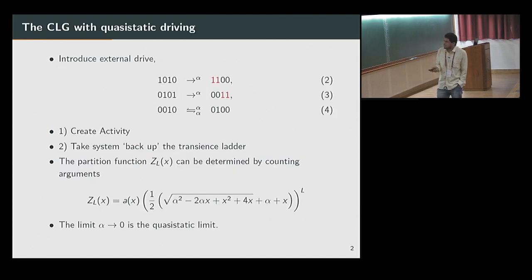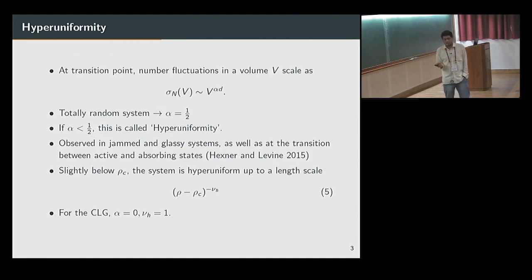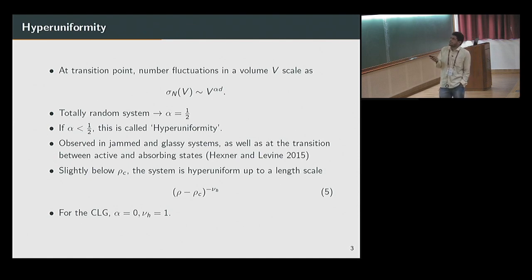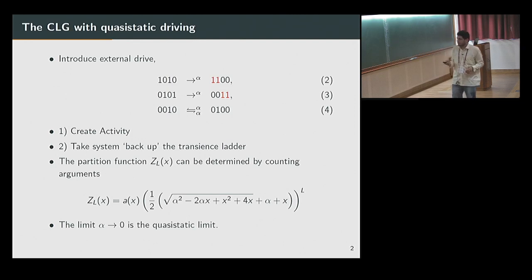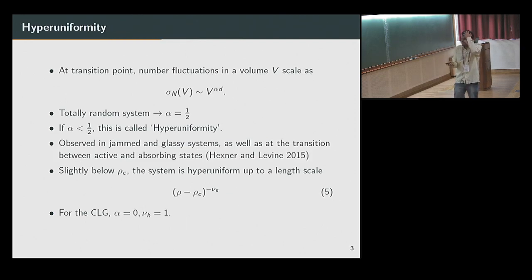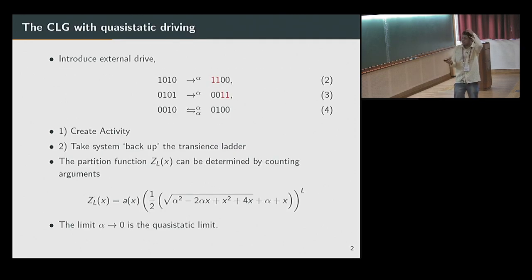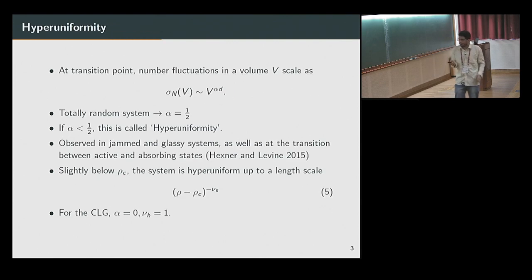From this counting and taking the limit alpha equal to zero, you can determine that for the CLG, alpha_D is zero — because the system at rho_c is just periodic, so there are no fluctuations in the number of particles in any volume. And nu_h equal to one, which you can get by looking at the partition function.